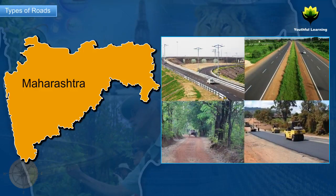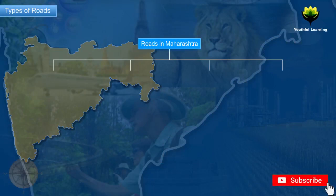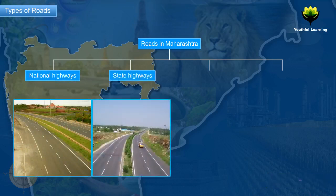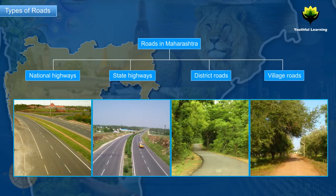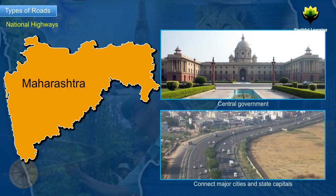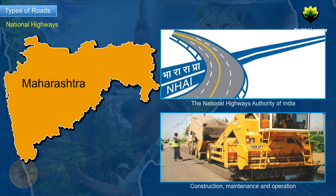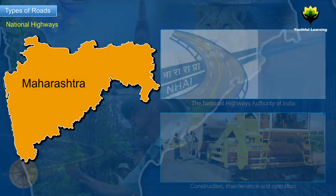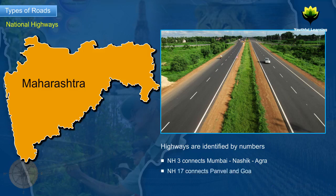Types of Roads. Based on the construction and maintenance, roads in Maharashtra can be classified as: 1. National Highways, 2. State Highways, 3. District Roads, 4. Village Roads. The central government builds and maintains a network of highways which connect major cities and state capitals. The National Highways Authority of India is the government agency responsible for the construction, maintenance and operation of highways, which are identified by numbers. For example, NH3 connects Mumbai-Nasik-Agra and NH17 connects Panvel and Goa.